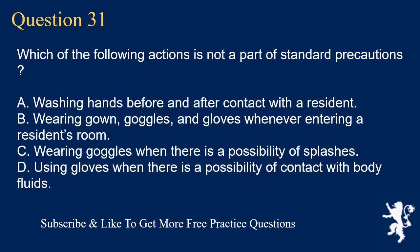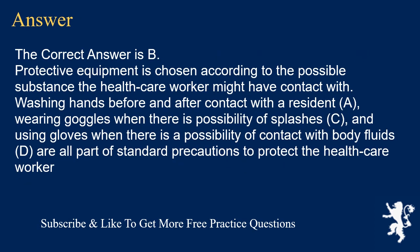Question 31. Which of the following actions is not a part of standard precautions? A. Washing hands before and after contact with a resident. B. Wearing gown, goggles, and gloves whenever entering a resident's room. C. Wearing goggles when there is a possibility of splashes. D. Using gloves when there is a possibility of contact with body fluids. The correct answer is B. Protective equipment is chosen according to the possible substance the healthcare worker might have contact with. Washing hands before and after contact, wearing goggles when there is possibility of splashes, and using gloves when there is possibility of contact with body fluids are all part of standard precautions.